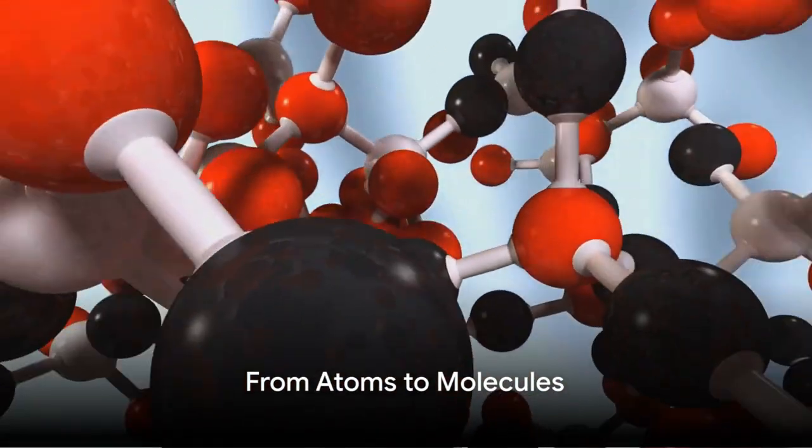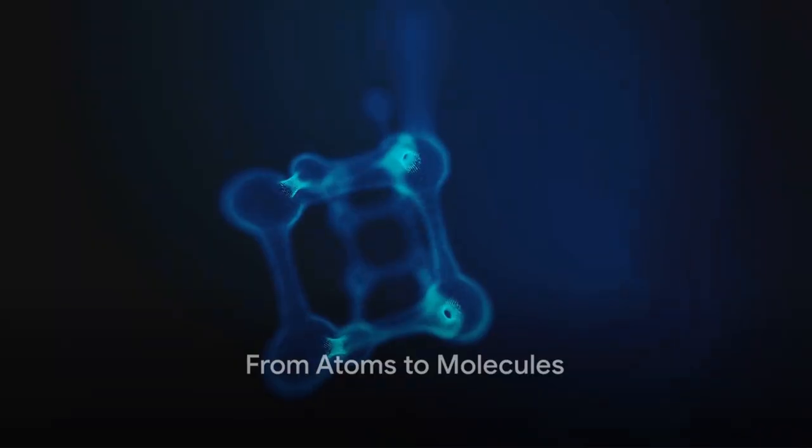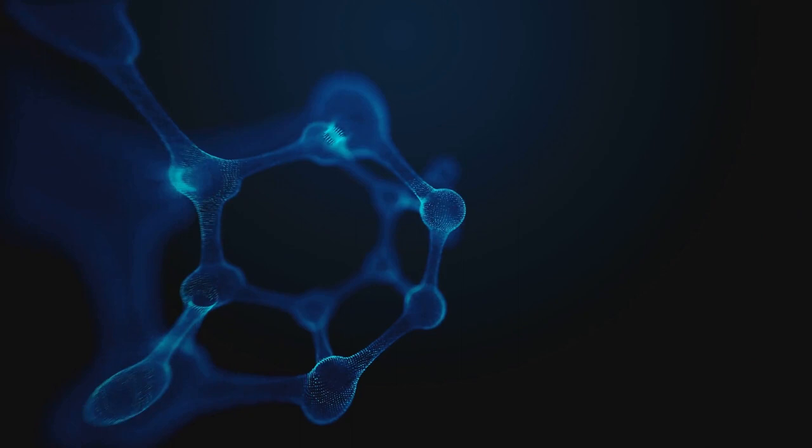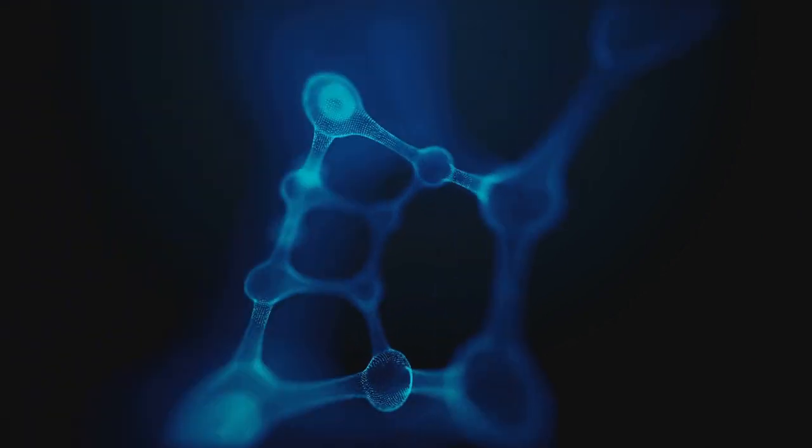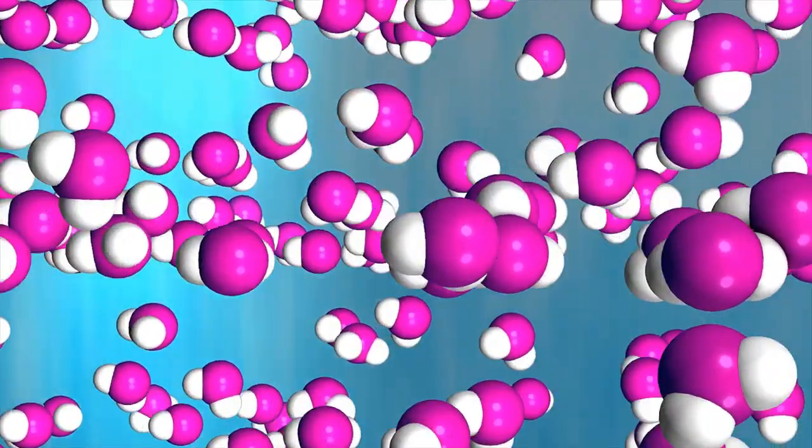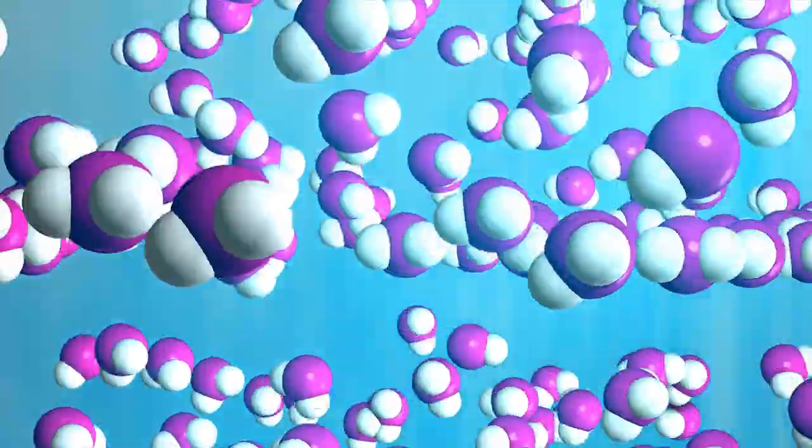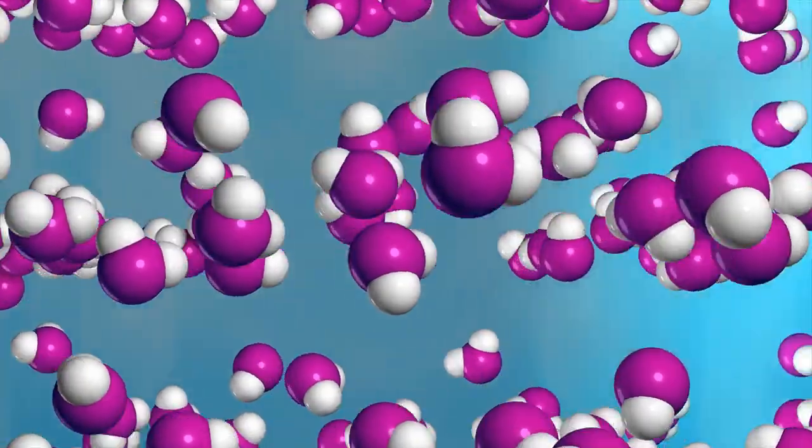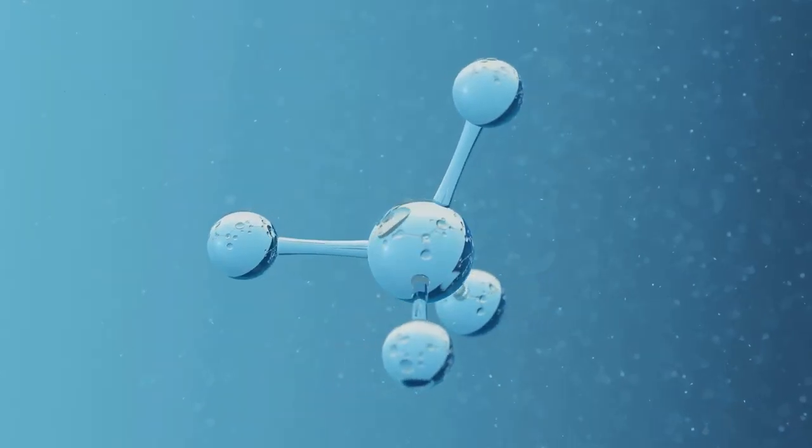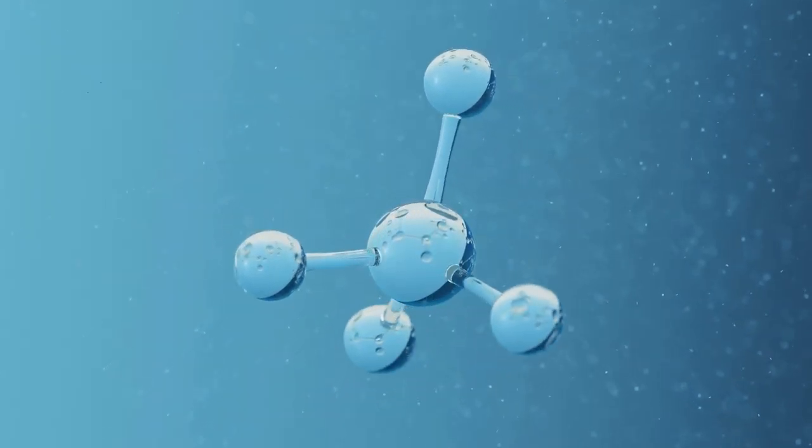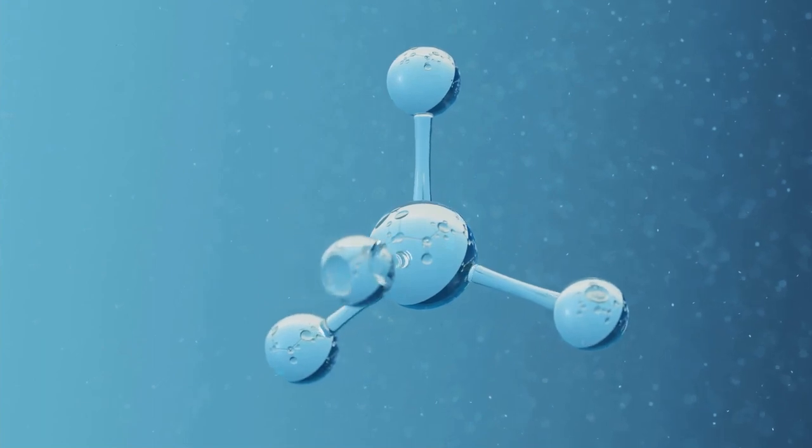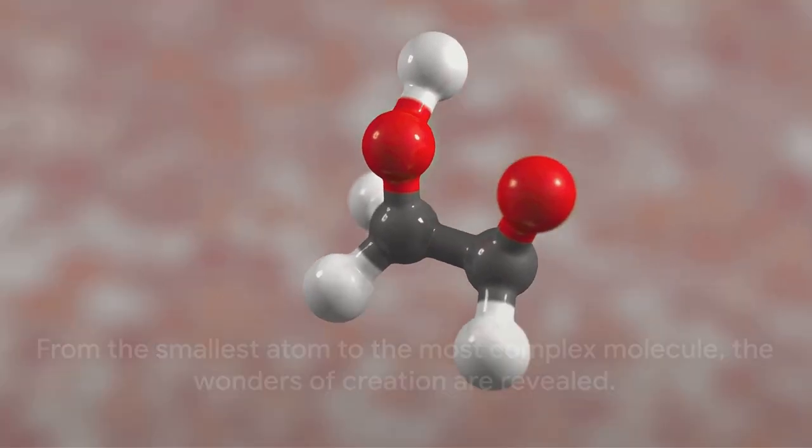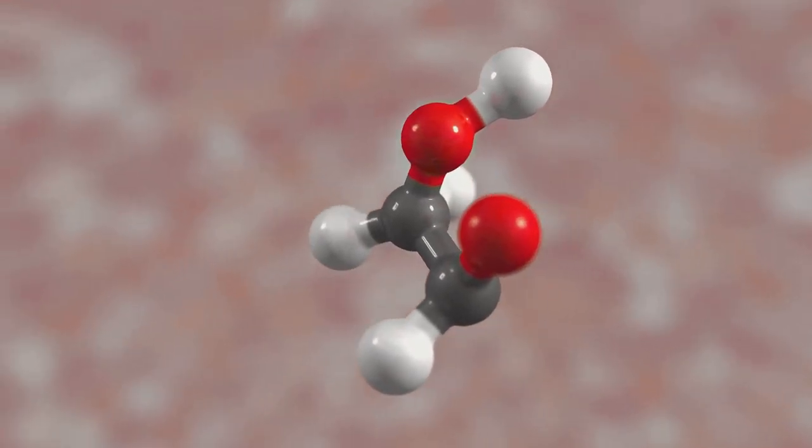When atoms join hands, they form molecules. Picture atoms as social butterflies. They love to mingle and combine, forming something new and exciting. Take water, for instance. One oxygen atom links arms with two hydrogen atoms. And voila! We have a water molecule, H2O. But atoms don't stop there. They can form more complex structures like sugar molecules. From the tiniest atom to the most complex molecule, everything around us is a marvel of creation.